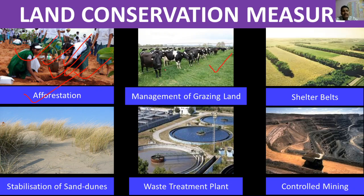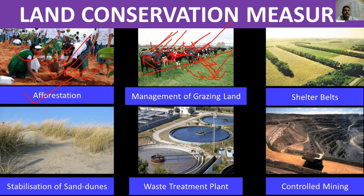For management of grazing land, a boundary is created — the white markings visible here. Animals are kept on one side and not allowed on the other side where grass is currently growing. Once the grass grows back, the animals are moved to that side. This is good management of grazing land so that all the grass is not finished at once.